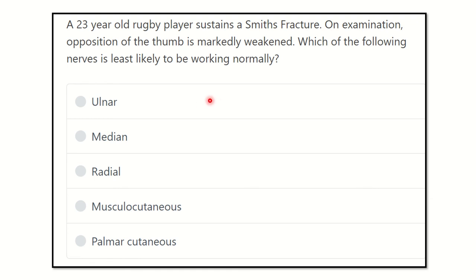Hello, how are you today? Let's start another question regarding MRCS — to crack the MRCS. A 23-year-old rugby player sustained a Smith fracture. On examination, opposition of the thumb is markedly weakened. Which of the following nerves is least likely to be working normally? The options are: ulnar nerve, median nerve, radial nerve, musculocutaneous nerve, and palmar cutaneous nerve.